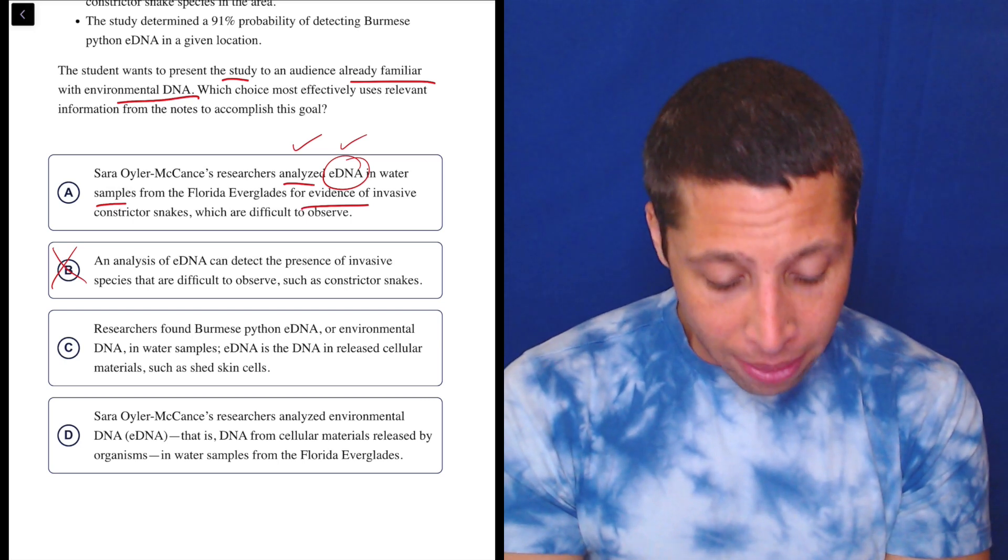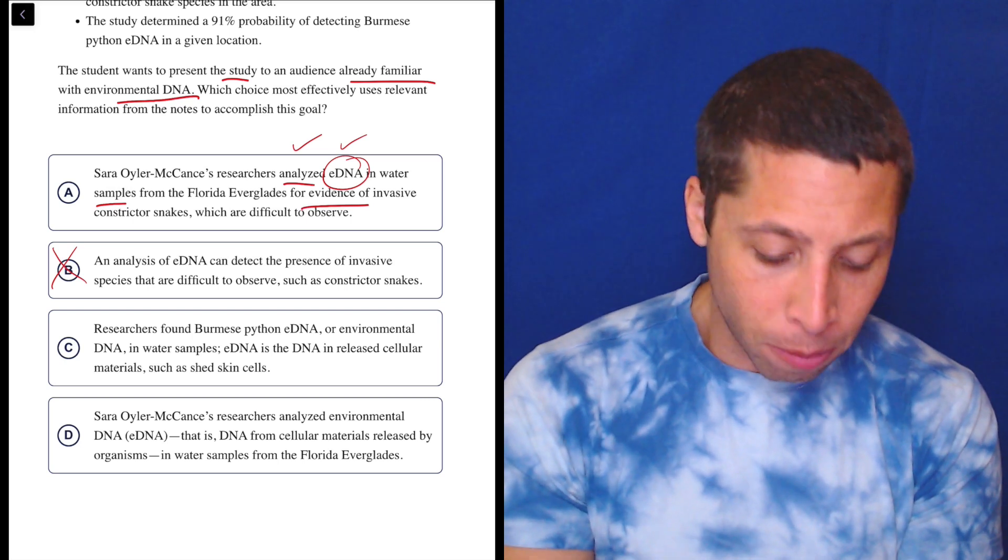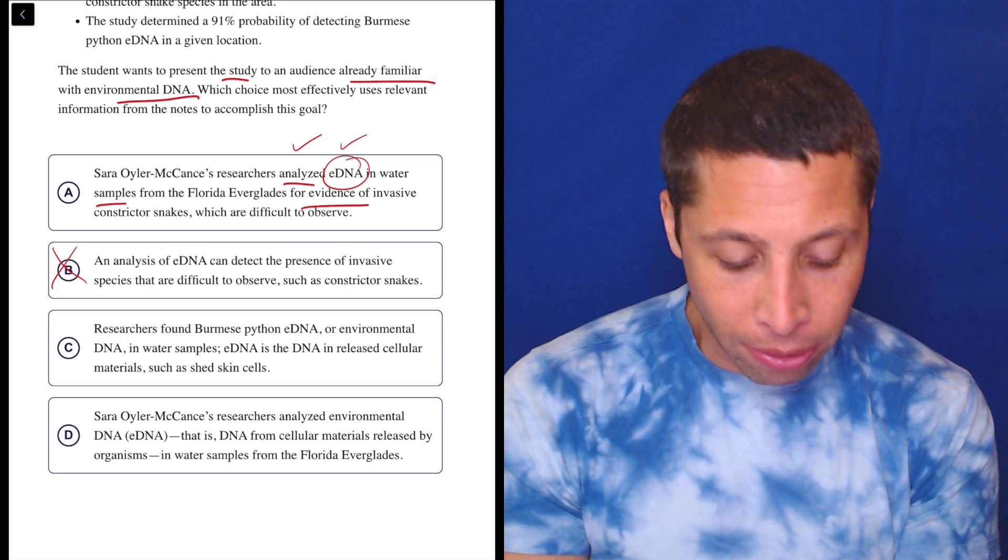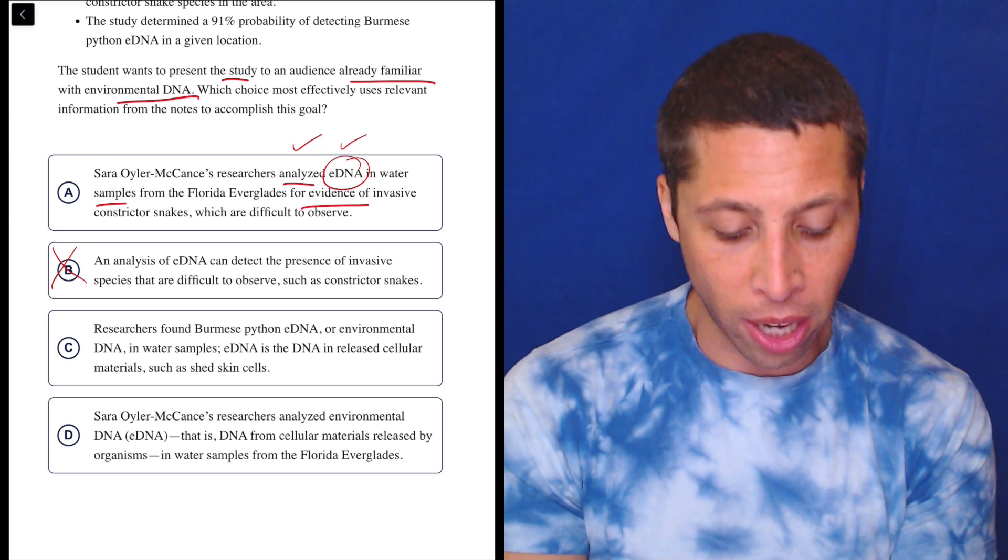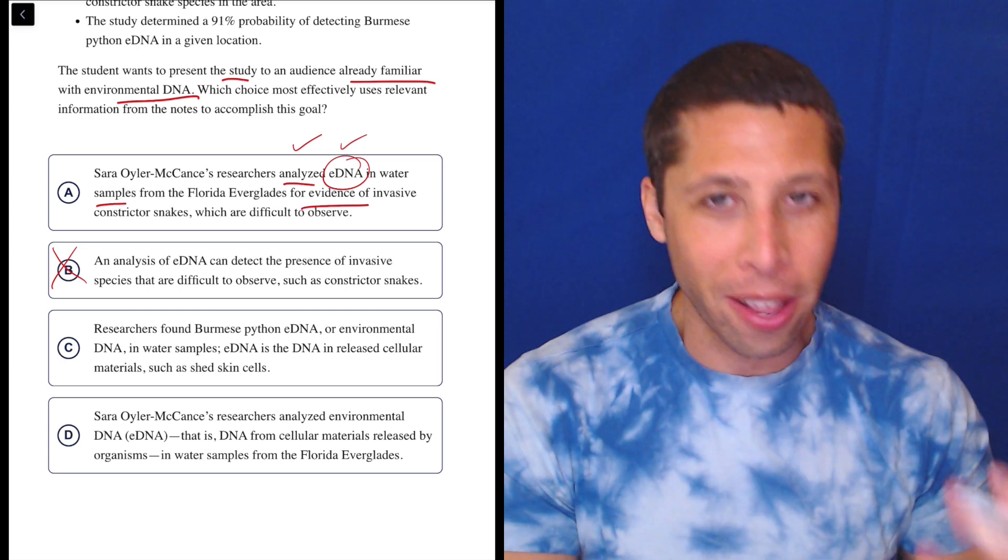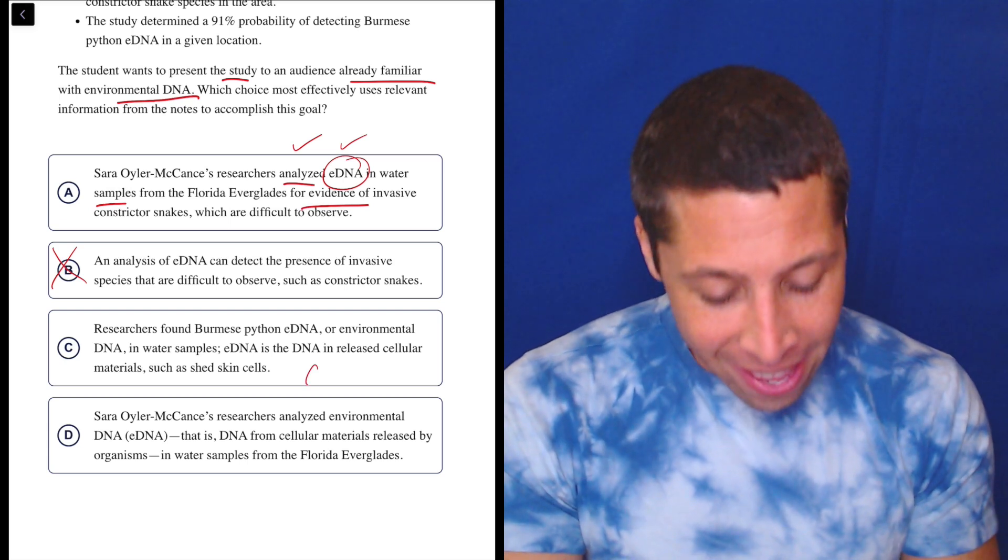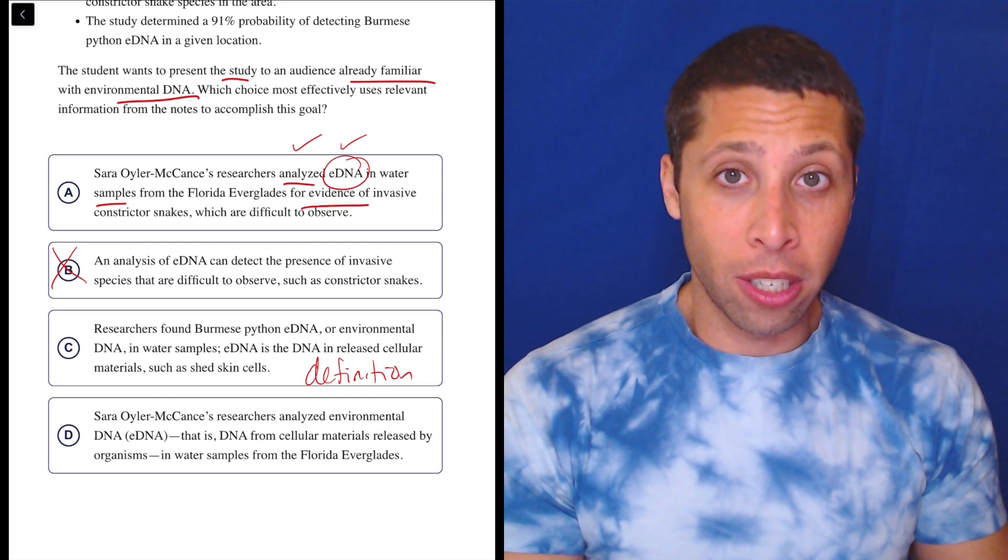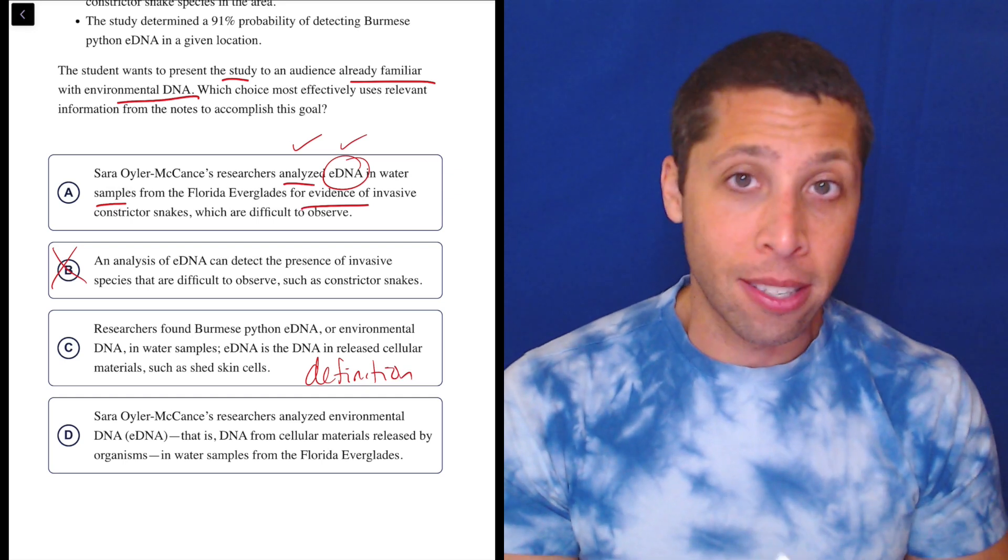Choice C: Researchers found Burmese python eDNA, or environmental DNA, in water samples. eDNA is the DNA in released cellular materials such as shed skin cells. This is a definition. And there you go. The only reason we would need a definition is if we did not know what eDNA is.